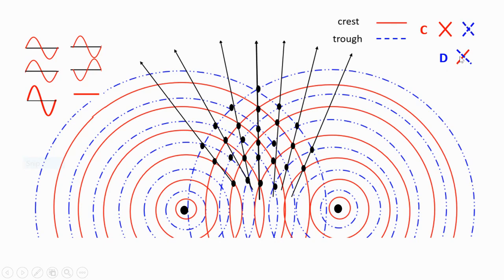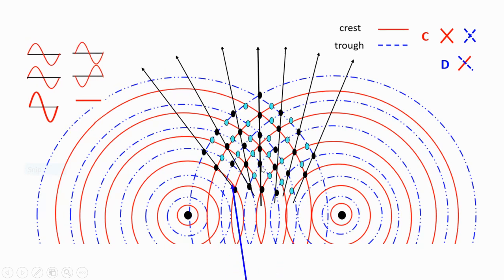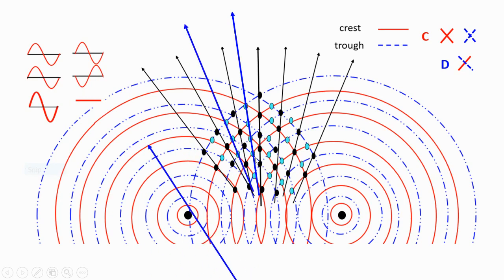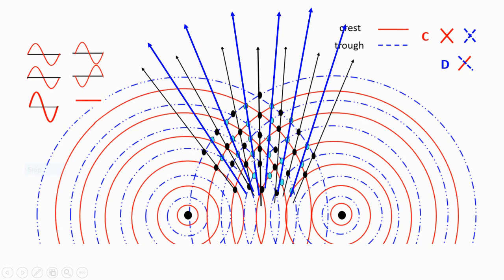Now let's find where we have areas where crests meet with troughs. We can find those intersections — crest with trough — at several points. We connect all of them and you can see they form the same line. We connect them using an arrow, and those blue dots represent areas of destructive interference.